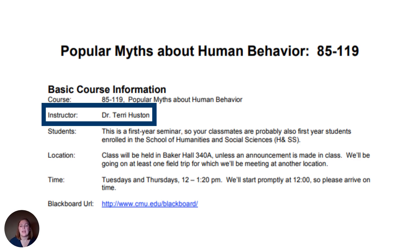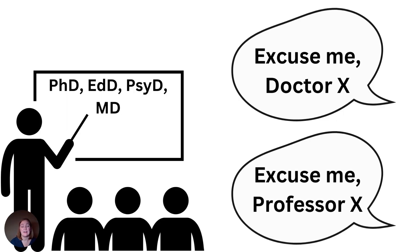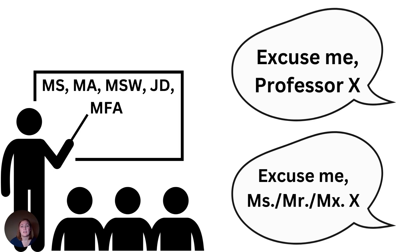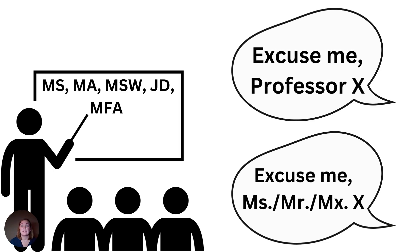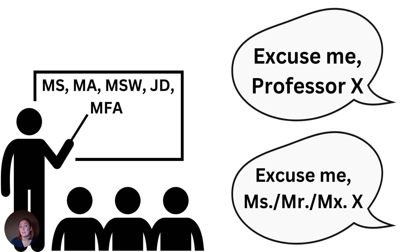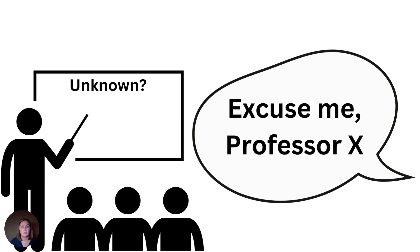If you are unsure, you can take this next piece of advice. If you don't have the syllabus or you're unsure, look at abbreviations after their name: PhD, EdD, PsyD, or MD — default to doctor or professor. You could say, excuse me, Dr. Blink, or excuse me, Professor X. If your instructor has a master's level degree or a juris doctorate — MS, MA, MSW, JD, MFA — it'd be appropriate to address them as professor or use an honorific of their choice, such as Ms., Mr., or Mx. If you don't know your instructor's degree or preferred form of address, calling them professor is a respectful default.